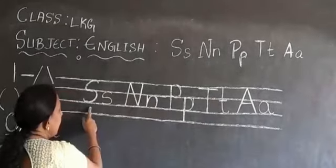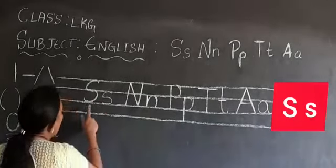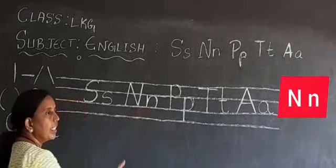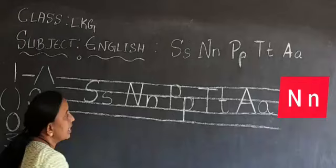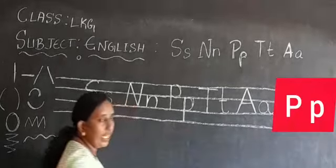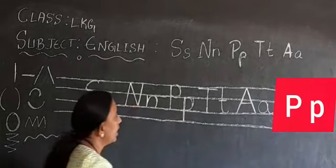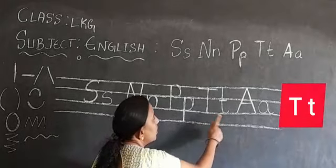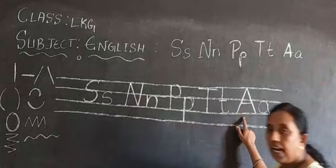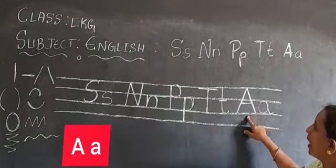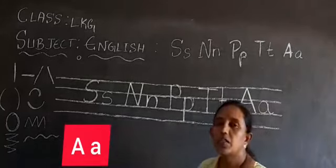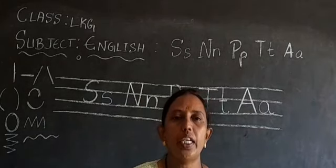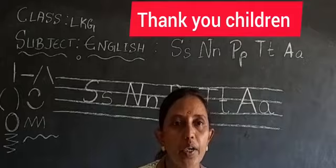Let me revise one more time. Capital S, small S. Capital N, small N. Capital P, small P. Capital T, small T. Capital A, small A. Have you understood how to write? You should practice well in four-line books — write the letters properly so it will be very neat. Will you practice? Bye students, thank you.